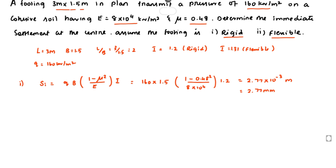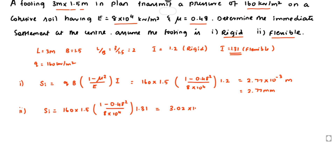For case two, the flexible footing: Sᵢ = 160 × 1.5 × (1 − 0.48²) / (8×10⁴ × 1.31). Solving this, we get Sᵢ = 3.02×10⁻³ m.